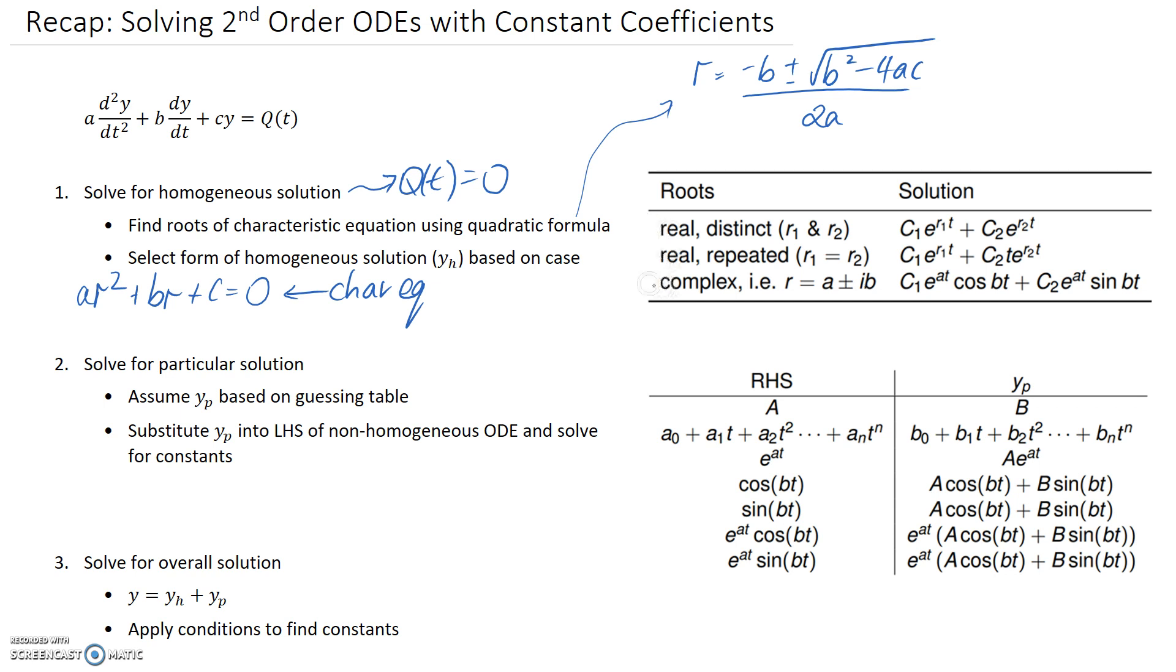So depending on which case you end up out of your quadratic equation, you need to select the form of the homogeneous solution based on that case. And that's what this table is showing in the second column. So depending on which type you had, this is the solution for yh, the homogeneous part. So these ones here are going to satisfy the equation when q of t is equal to 0. So it's just a matter of picking the appropriate form and then you should be able to substitute in the r1 and r2 values here or the a and b values if you have this case. The c1s and the c2s you won't know unless you have conditions that we'll deal with at the end.